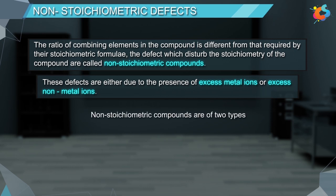Non-stoichiometric compounds are of two types: metal excess defect and metal deficiency defect.